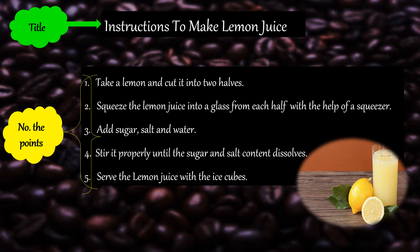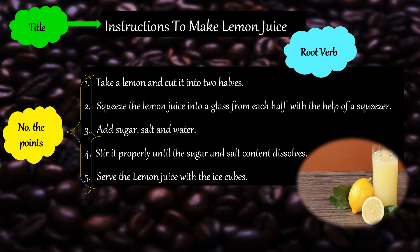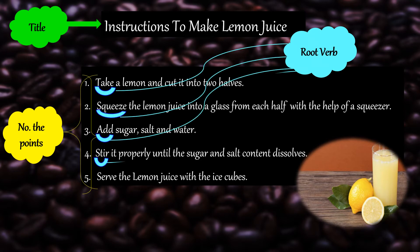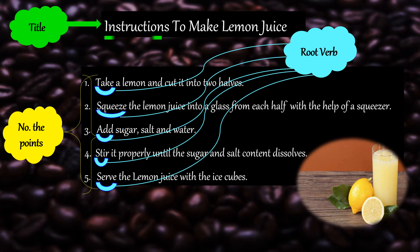Now let's see whether we followed the rules. We gave the title, numbered the points, and started each sentence with a root verb — take, squeeze, add, stir, serve. Every single statement has a root verb, so we have to start each statement with a root verb, and that is done here.